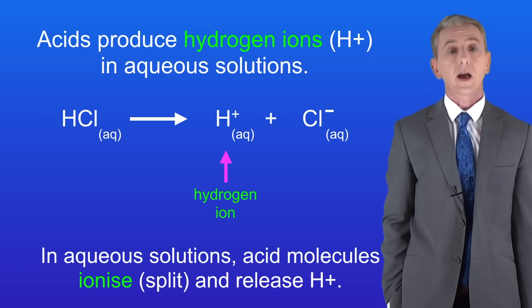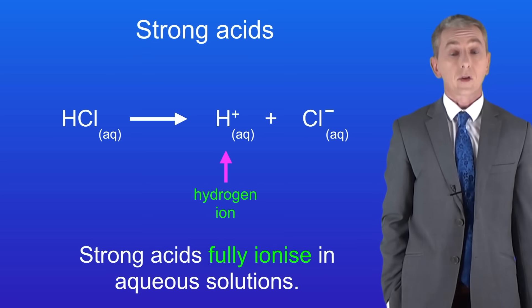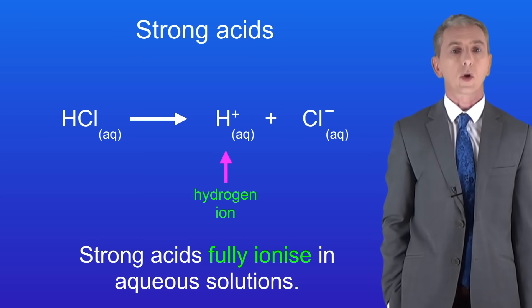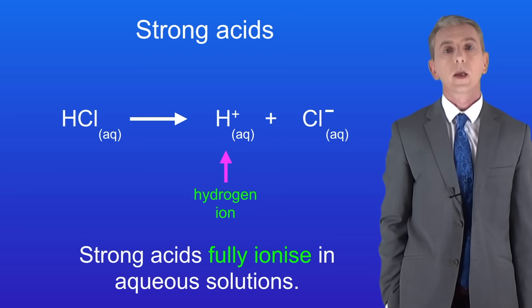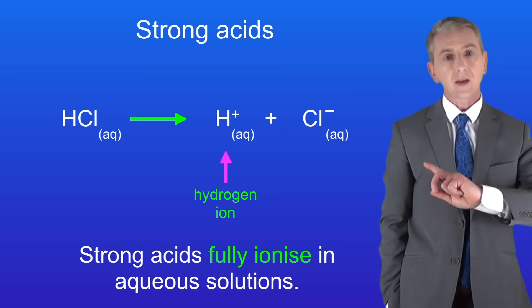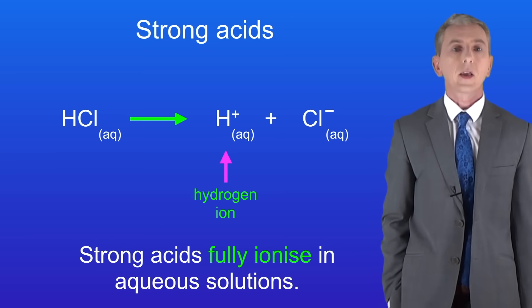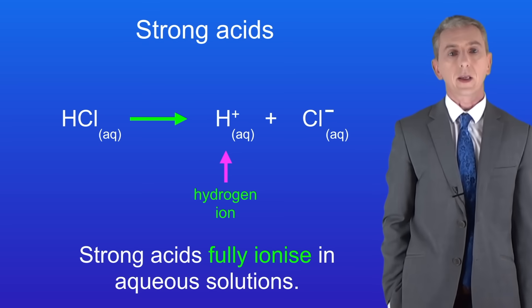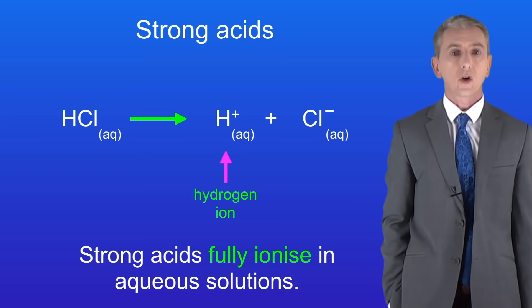Hydrochloric acid is an example of a strong acid and you need to know what that means. Strong acids fully ionize in aqueous solutions. In other words, every acid molecule ionizes like this. We can tell that from this arrow. The arrow goes in one direction only, telling us that the acid has fully ionized.